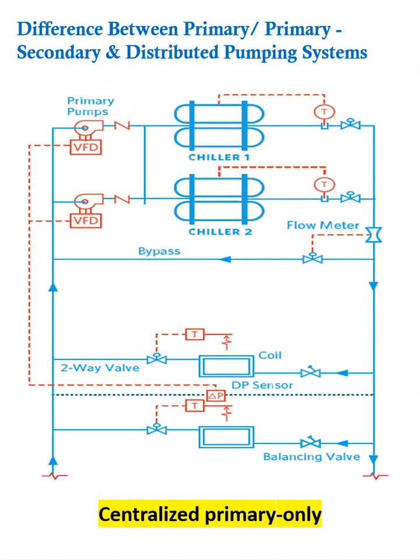We will discuss the difference between primary variable, primary secondary, and the distributed pumping system for chilled water applications. Here you can see there is a plant room, and this plant room is connected with the primary variable pump where the VFD has been integrated to the primary pump. The chilled water is being pumped with both of these pumps to the load side, which is the air handling unit or the coil. This typical arrangement is called the centralized primary variable system.